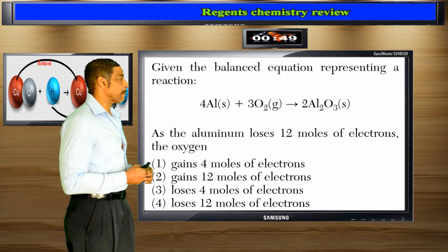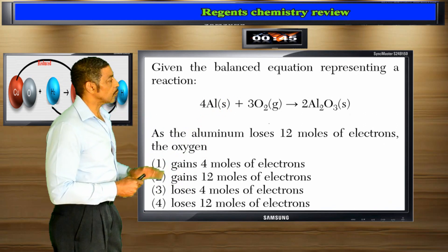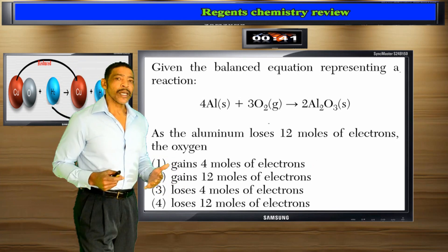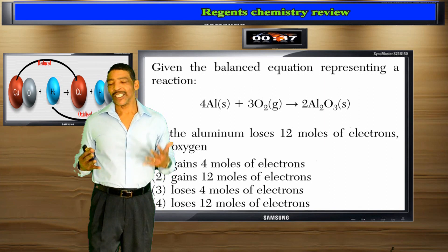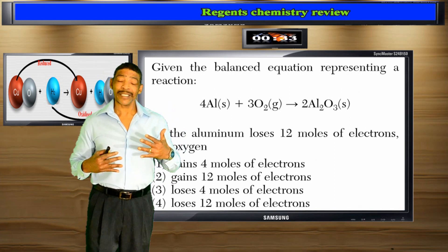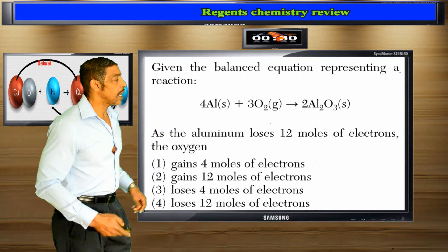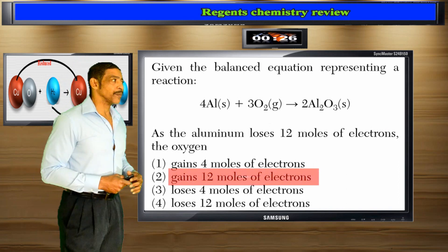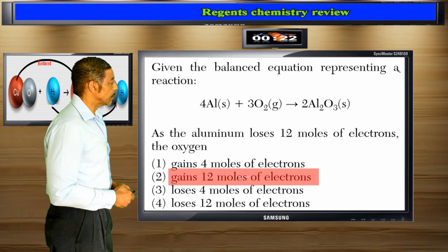Finally, given this balanced equation, as aluminum loses 12 moles of electrons, the oxygen will — well, the key thing about redox reactions is that the number of electrons lost will always equal the number of electrons gained, because the processes are simultaneous. So the best answer to this question is number 2: the oxygen will gain 12 moles of electrons.